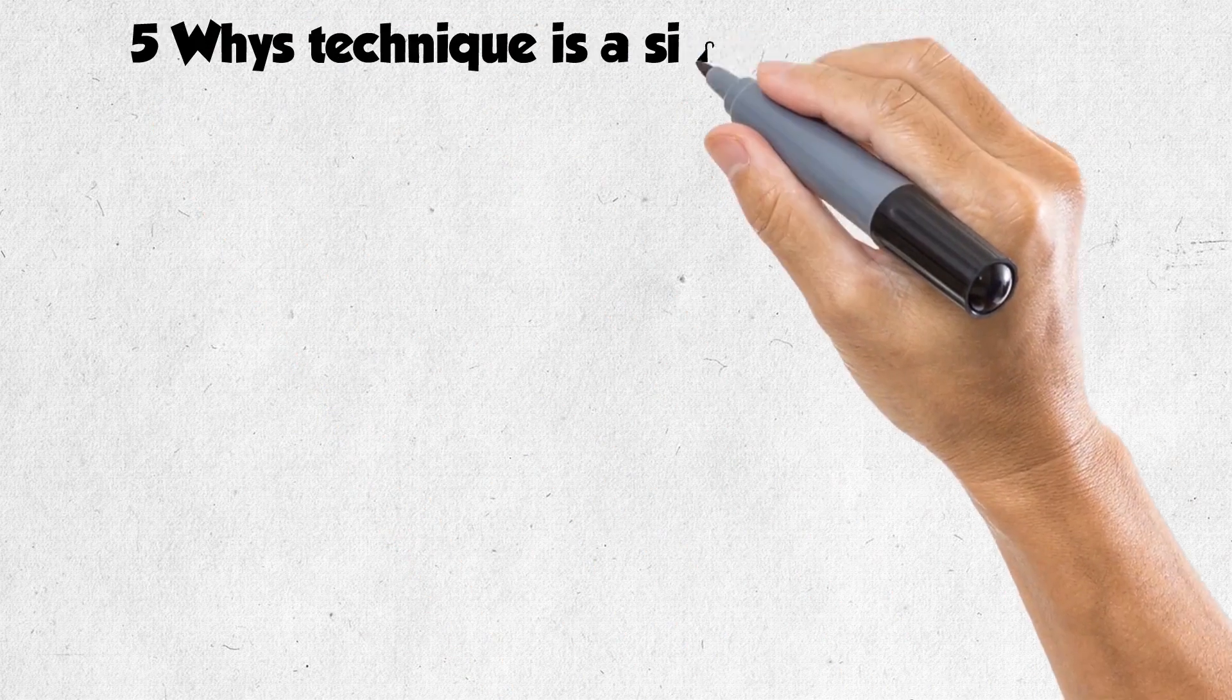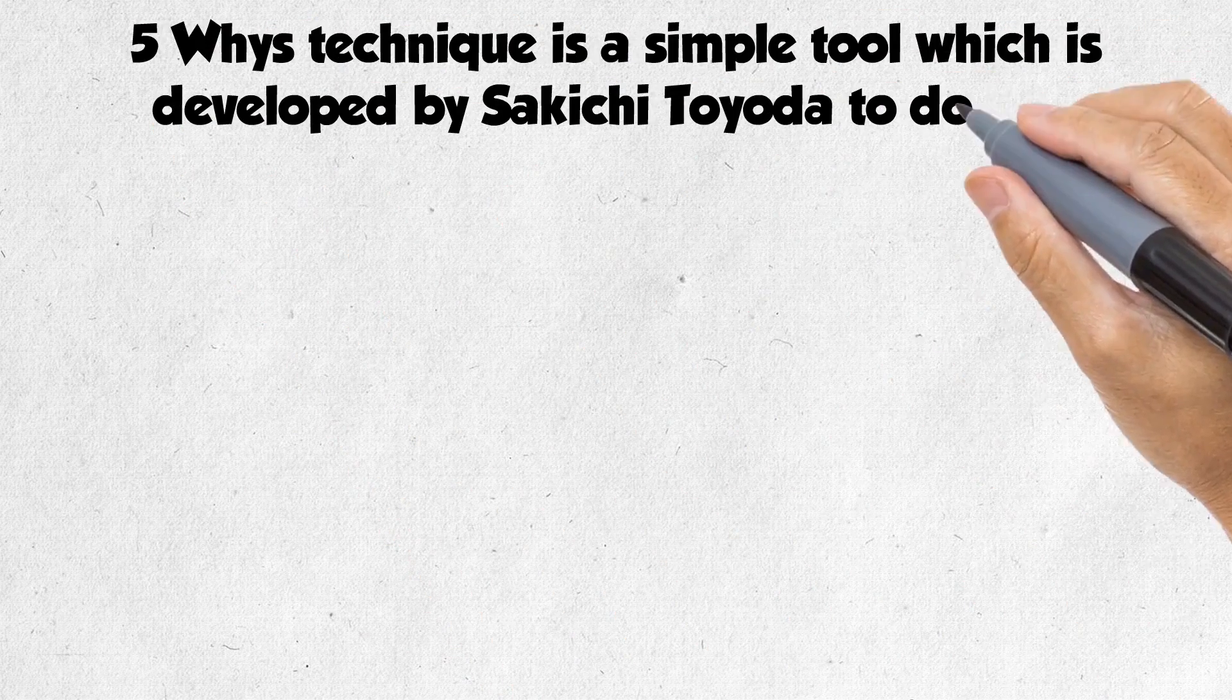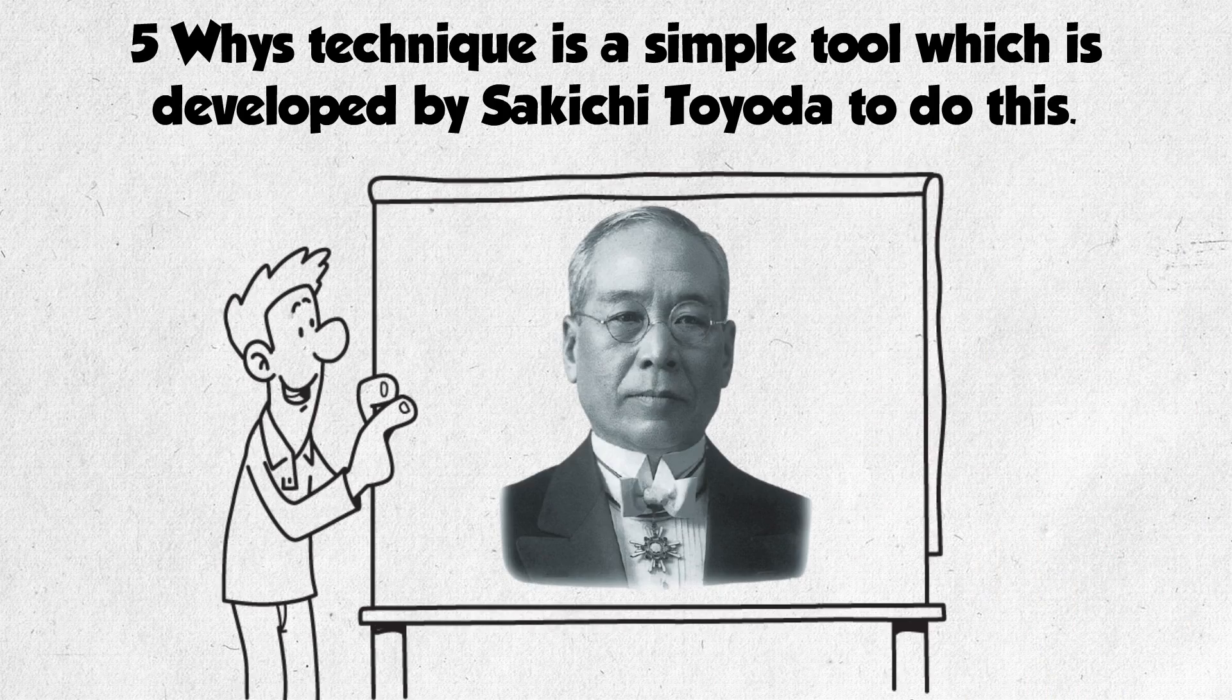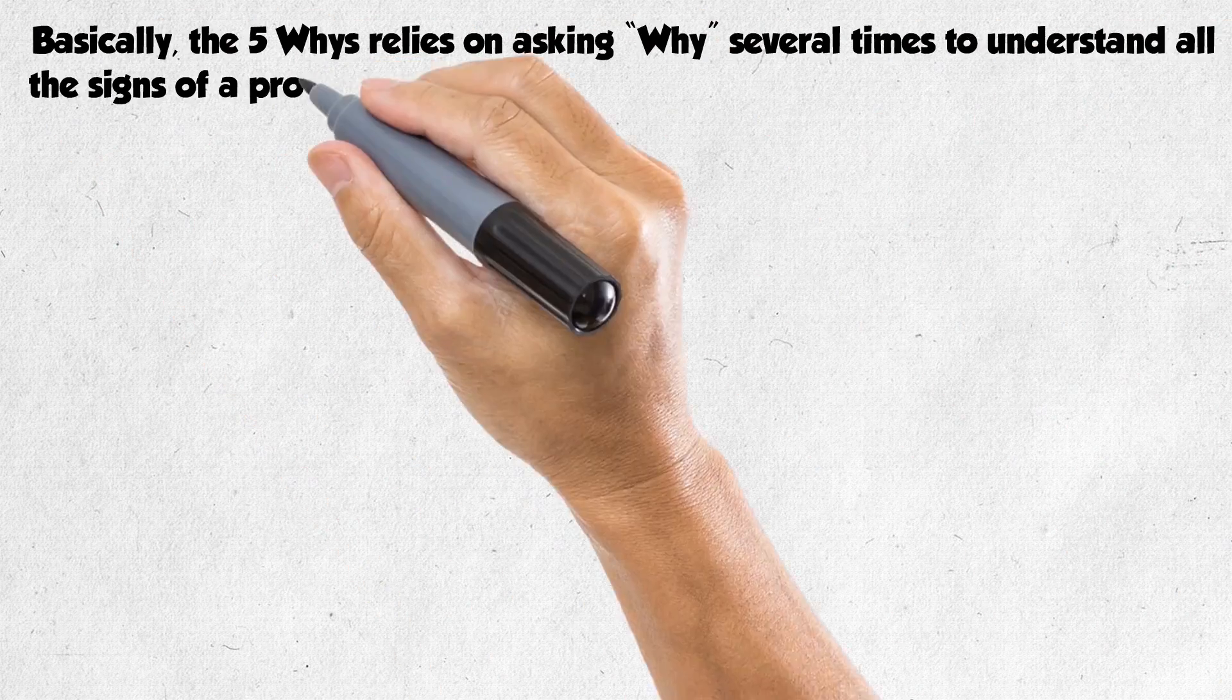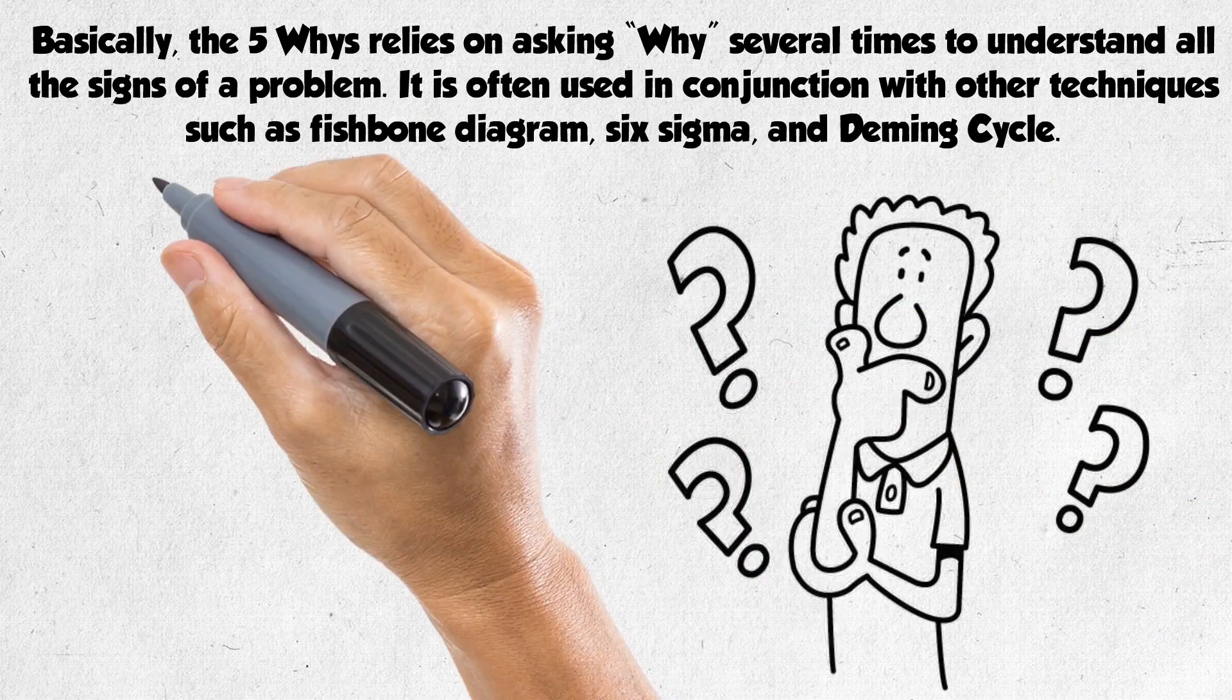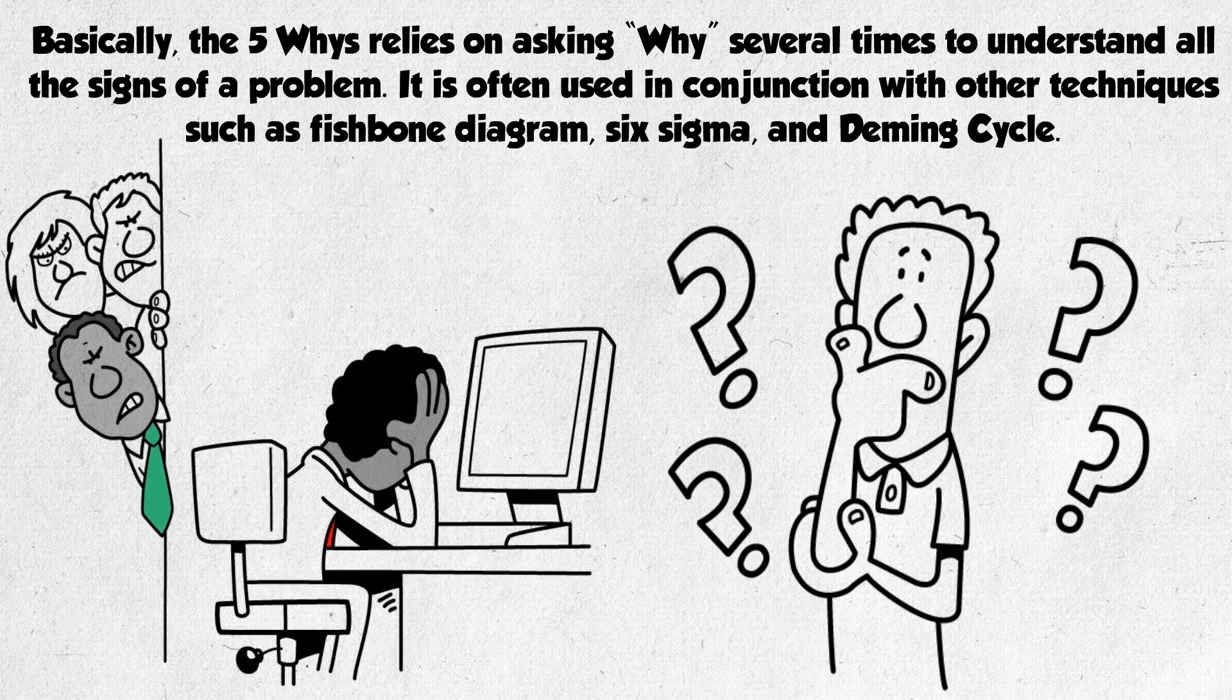5 Whys technique is a simple tool which was developed by Sakichi Toyoda to do this. Basically, the 5 Whys relies on asking why several times to understand all the signs of a problem. It is often used in conjunction with other techniques such as Fishbone Diagram, Six Sigma, and Deming Cycle.